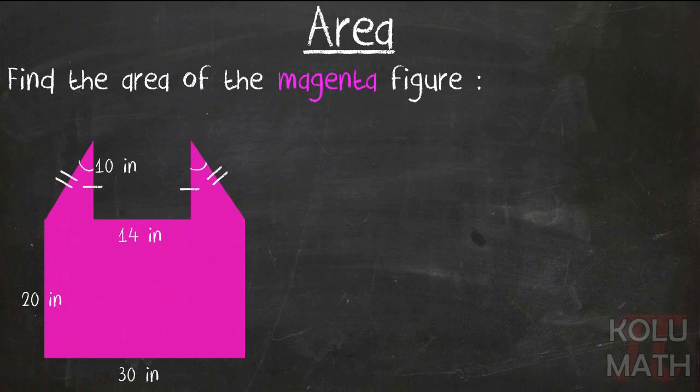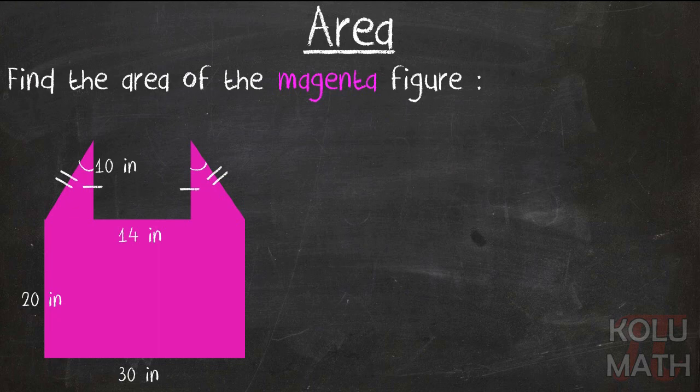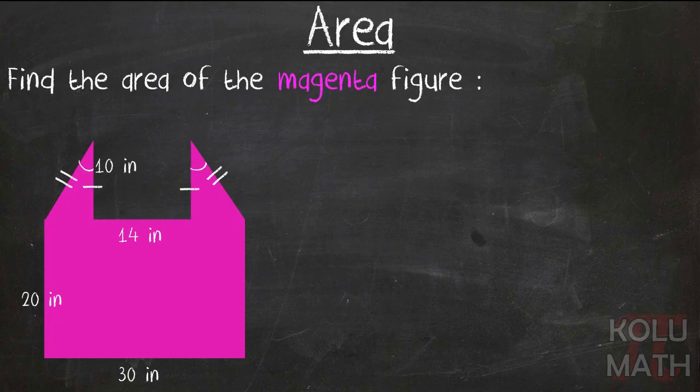Let's take a look at an example. Find the area of the magenta figure. Okay. Well, all right. Step one, separate the figure into easy shapes. So, I mean, it kind of looks like a kitty cat there. But yeah, I mean, we've got two triangles and a rectangle. Okay.